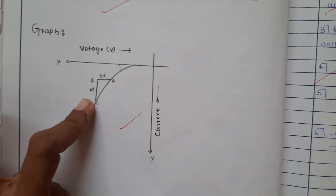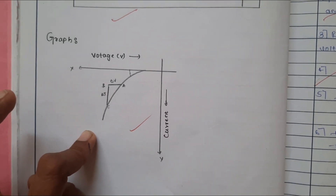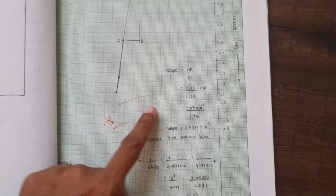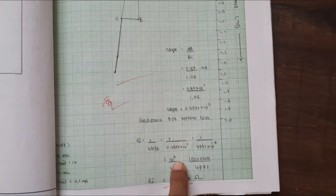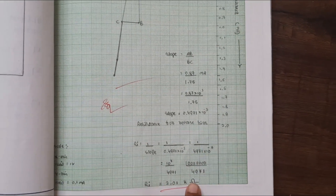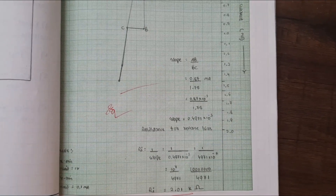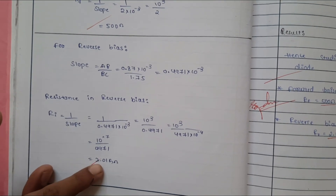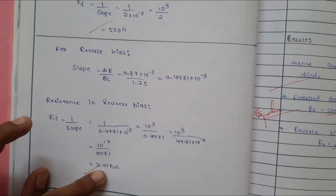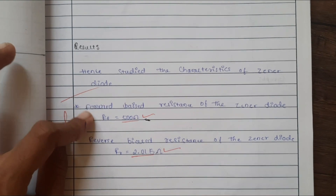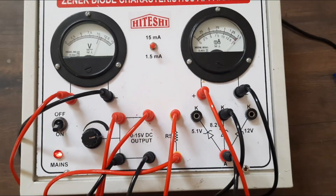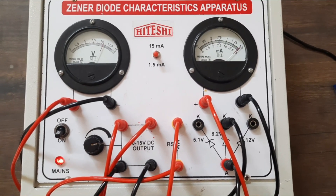For the reverse bias graph, you should also calculate the slope in terms of resistance. After calculating the slope for the reverse bias curve, the result is approximately 2 kΩ. To summarize: the forward bias slope gives a resistance of 500 Ω, and the reverse bias resistance equals 1 divided by slope, which is 2 kΩ. Write down the result: forward bias resistance of the Zener diode is 500 Ω; reverse bias resistance is 2 kΩ. This is how you perform the Zener diode experiment in forward and reverse bias.